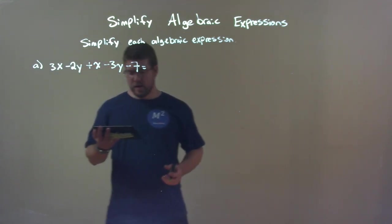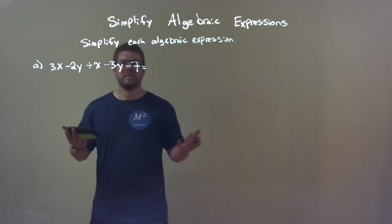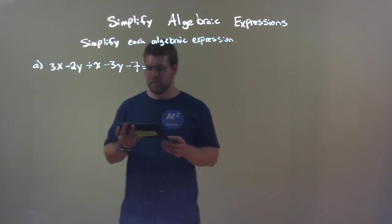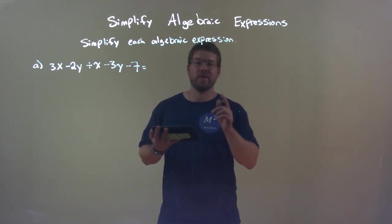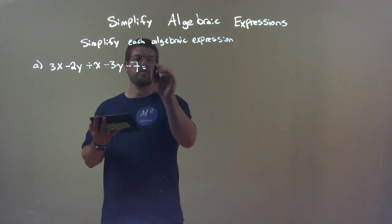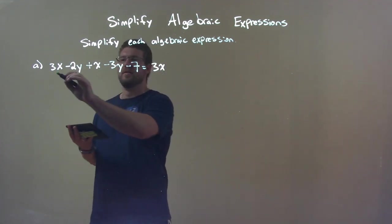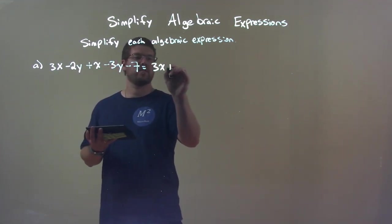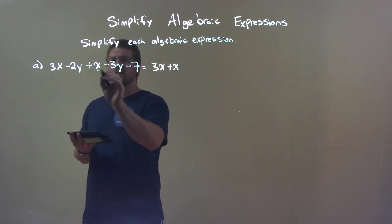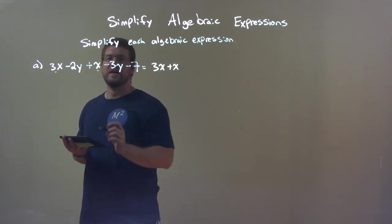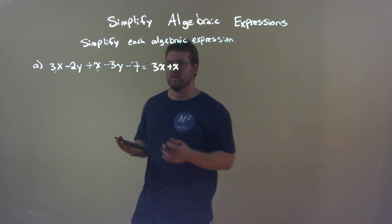Well the first thing is I want to rearrange and put our like terms together. Okay, this is the commutative property of addition. So I put all my x's first, so we have 3x here first and then I bring that x plus 1x next to it. And sometimes I put little dashes or dots underneath to show that I've used that term so I don't forget it.